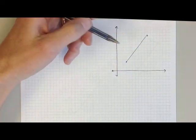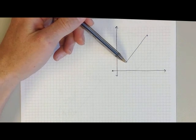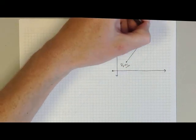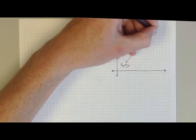So here's a line that goes from x0, y0 to x1, y1.